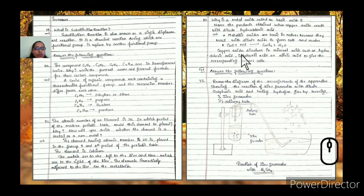What is a metal oxide called? Why is it known as a basic oxide? Name the products obtained when copper oxide reacts with dilute hydrochloric acid. Metal oxides are basic in nature because they react with dilute acids to form salt and water. Copper oxide CuO plus hydrochloric acid gives copper chloride plus water. Copper oxide dissolves in mineral acids such as hydrochloric acid, sulfuric acid, or nitric acid to give the respective copper salts.